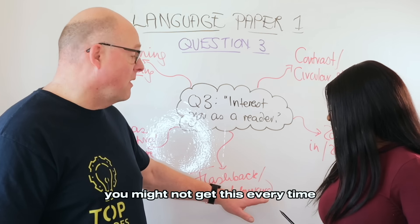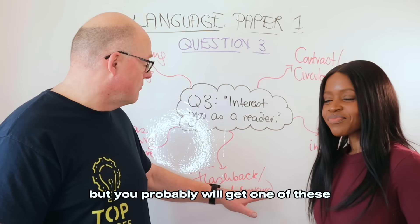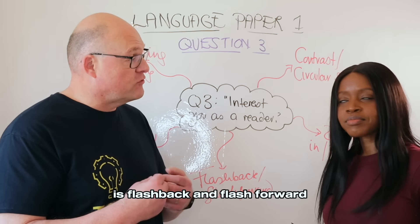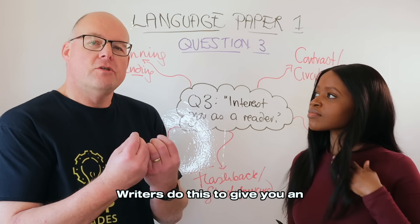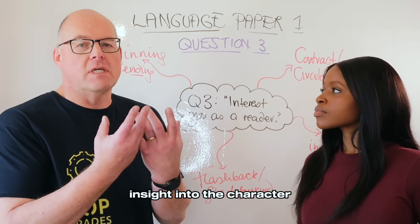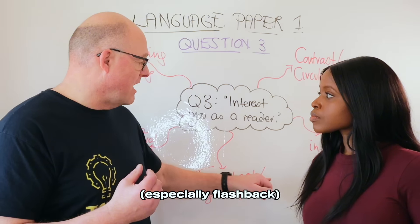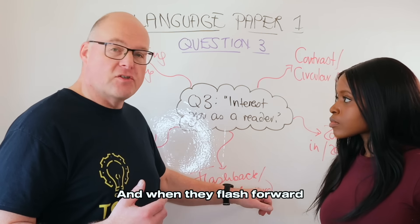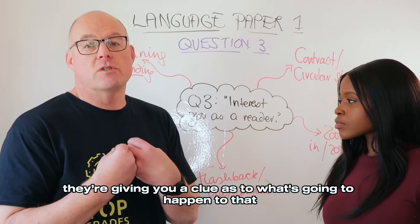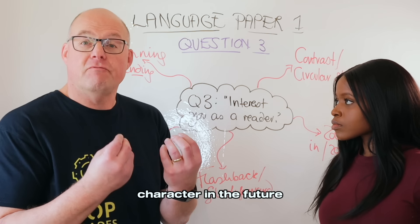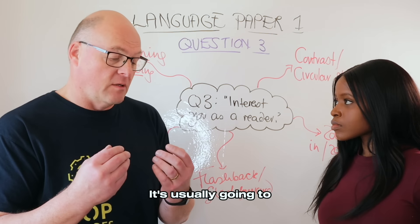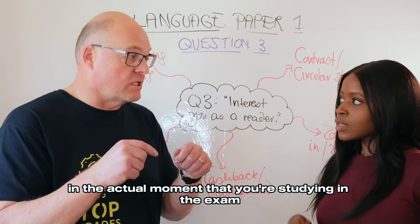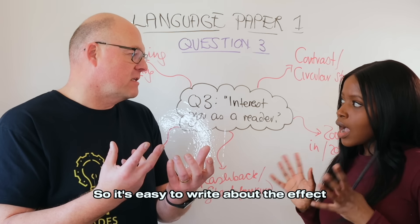The next technique — you might not get this every time, but you probably will — is flashback and flash forward. Writers use flashback to give you an insight into the character, and that's the effect you're going to write about. When they flash forward, they're giving you a clue as to what's going to happen to that character in the future, and it's usually going to be a contrast to what's happening in the actual moment being studied in the exam, so it's easy to write about the effect.